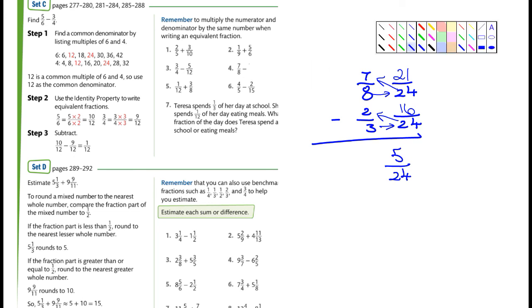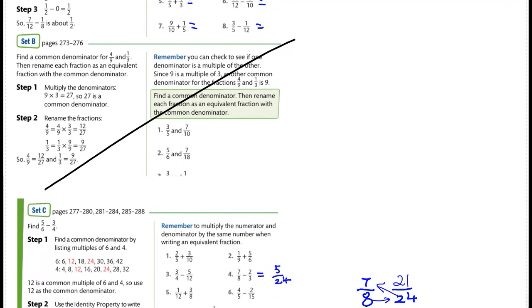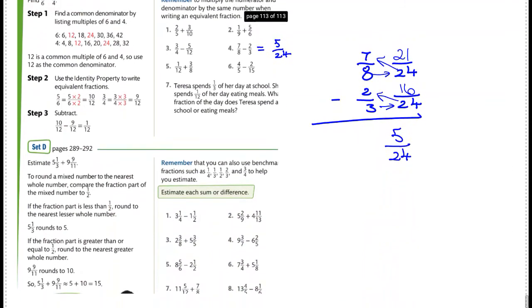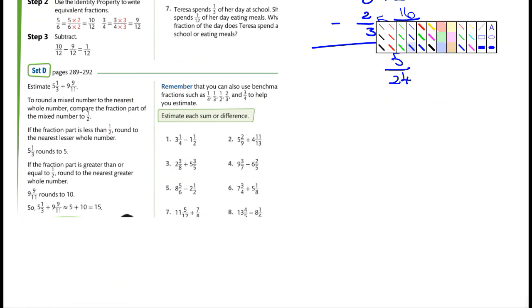Whoops. I erased part of the problem. Let's try that again here. I'll go from this direction. There we go. So number, was that number four I did? Yep. Equals five over 24. All right. And set D. Yeah, there you go. Don't even worry about it.